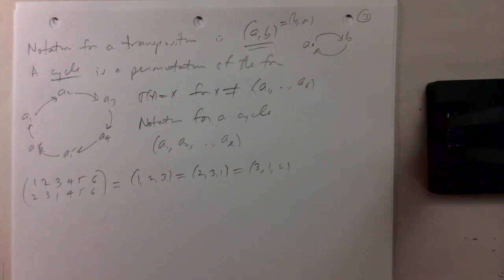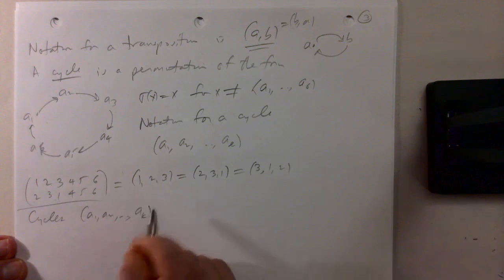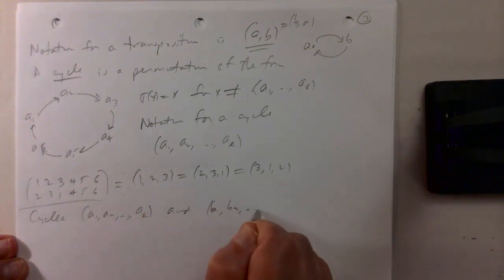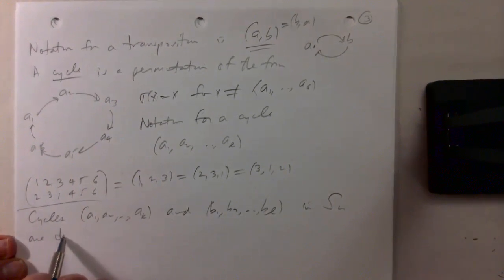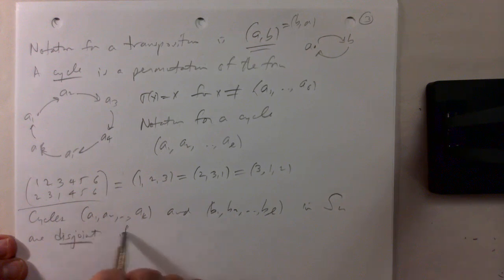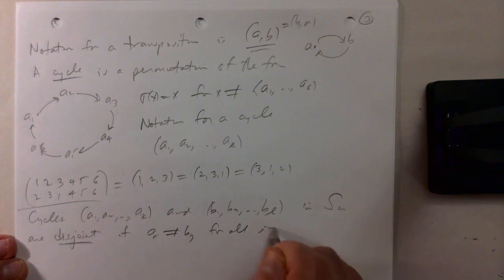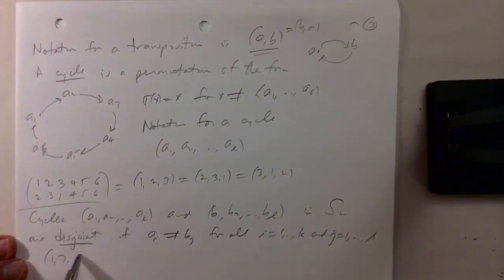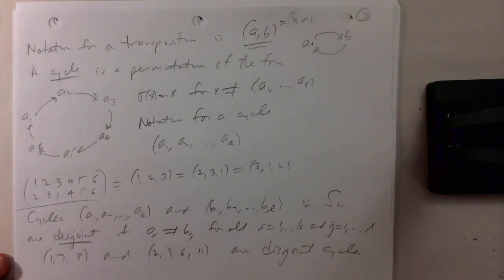Just as in elementary number theory you can factor a positive integer into a product of prime numbers, in group theory you can factor a permutation into a product of cycles. Two cycles (a1,...,a_k) and (b1,...,b_l) in S_n are said to be disjoint if the numbers in one are all different from the numbers in the other — that is, a_i ≠ b_j for all i from 1 to k and j from 1 to l. For example, (1,7,8) and (2,3,6,11) are disjoint cycles.